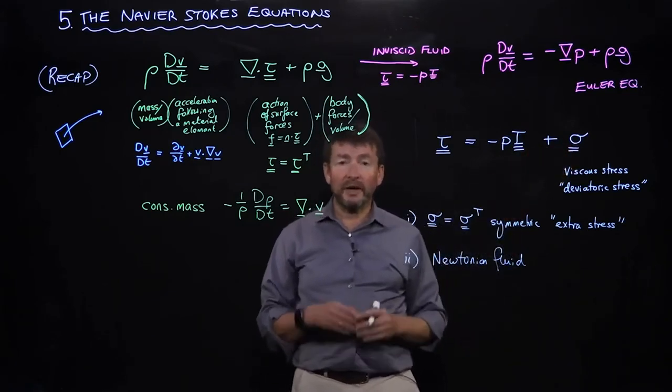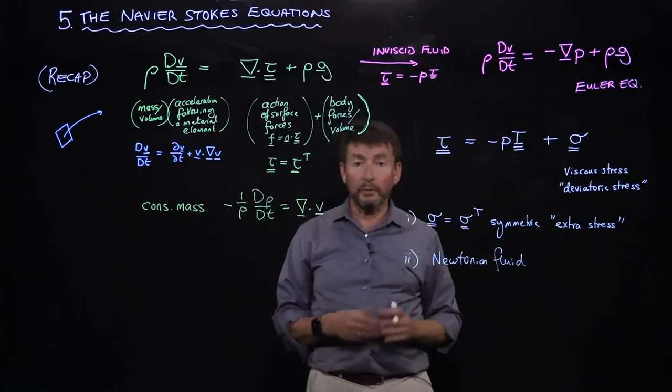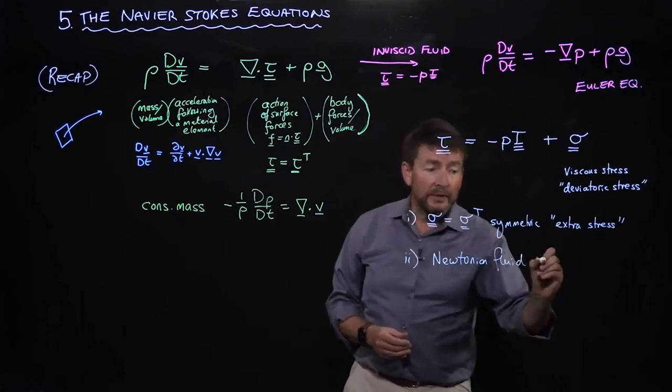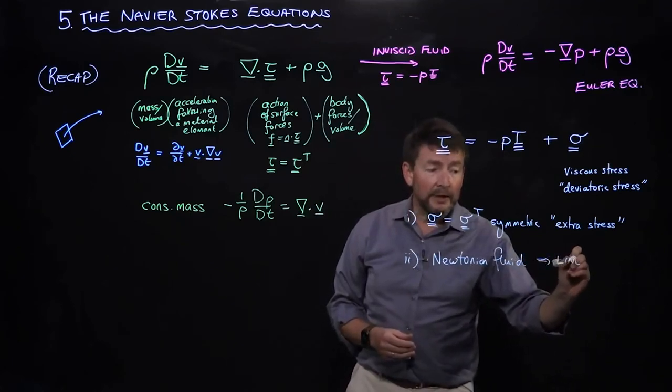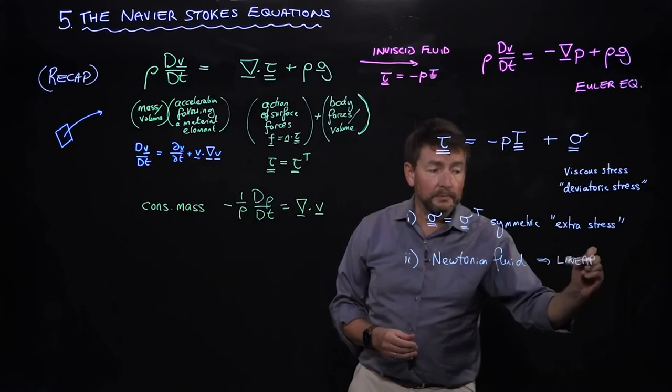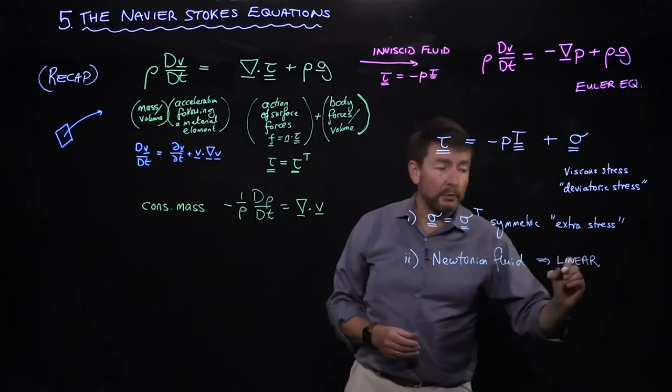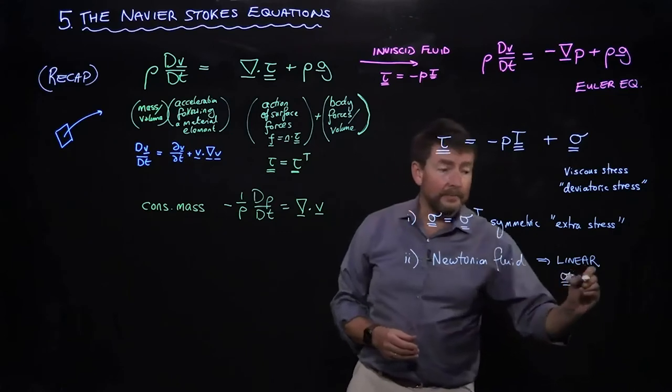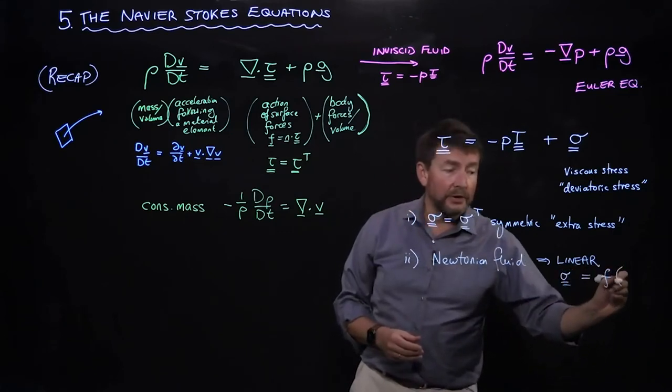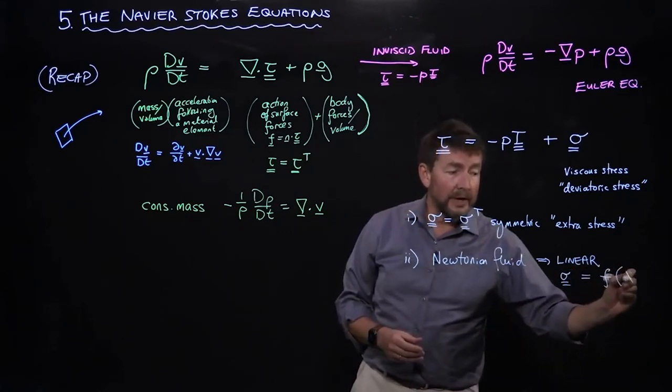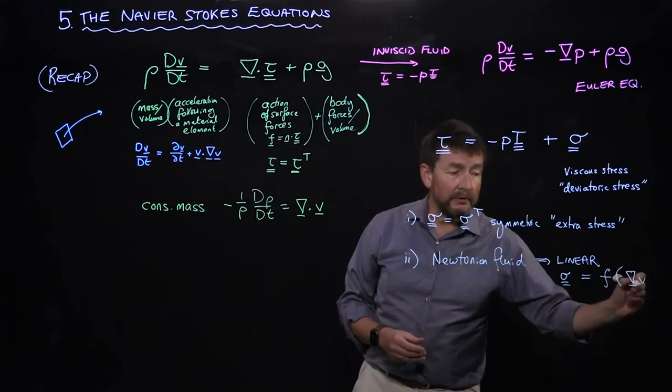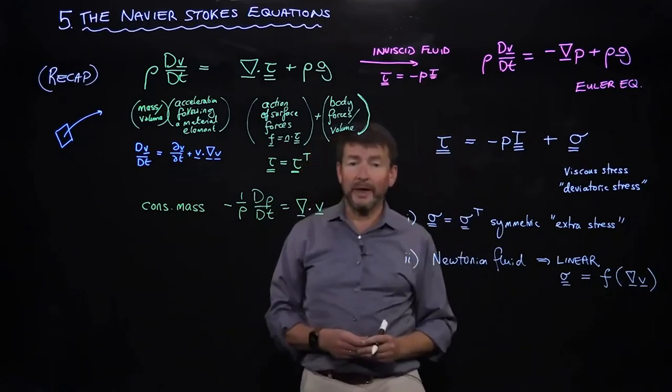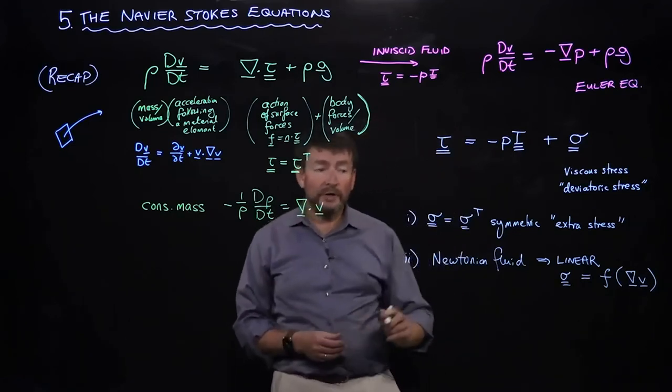Essentially we're going to think about a linear relationship between this viscous stress and the rate of fluid motion. We're going to spend a little bit of time thinking about how we are going to do that, but essentially we're going to end up with a linear relationship between this extra stress and some function of the gradients of the velocity fields.